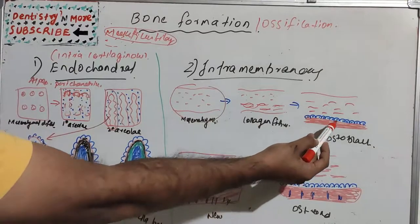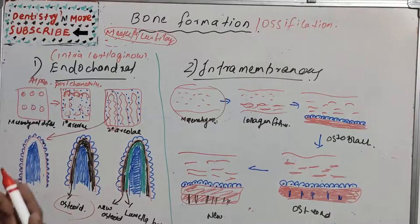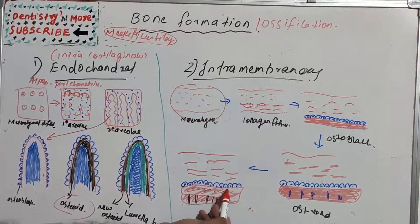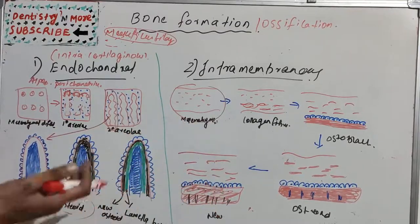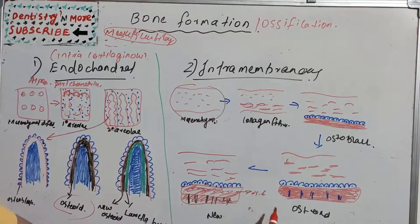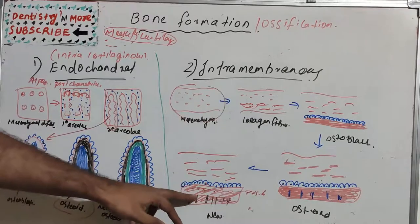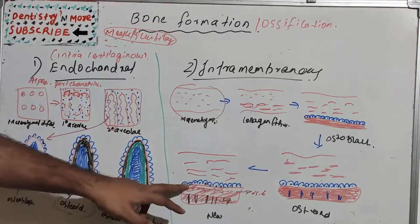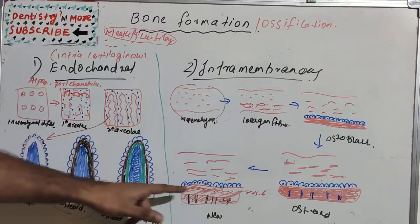These osteoblasts secrete a gelatinous matrix called osteoid, which is mineralized bone. This osteoid converts into bone lamella by deposition of calcium salts. The osteoblasts then move away from the lamella and a new layer of osteoid is secreted, which also gets calcified. The process is almost the same: osteoid becomes new bone, and the process continues — when osteoid forms and becomes lamella bone, the osteoblasts move away and a new layer of bone is laid down.